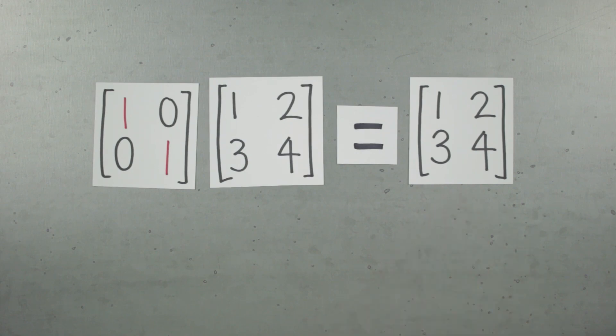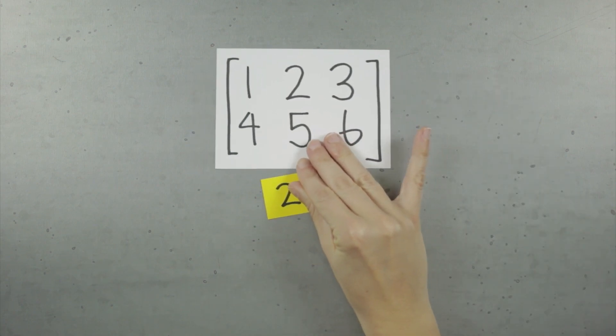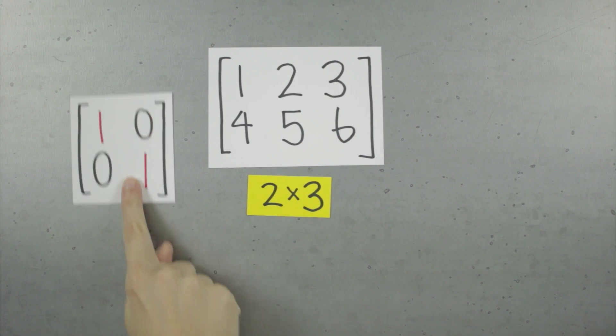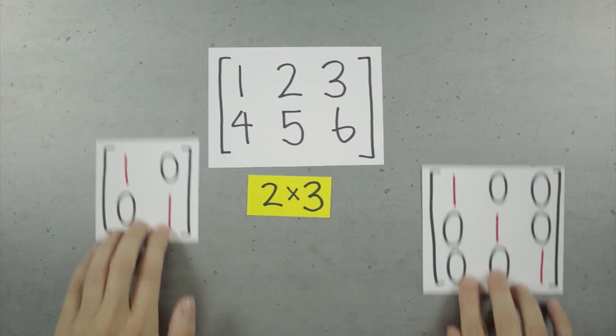All we have to do is be careful with our dimensions. If we have a 2x3 matrix, and we put the identity matrix in front, it's going to be I2. But if we put it second, it'll need to be I3.